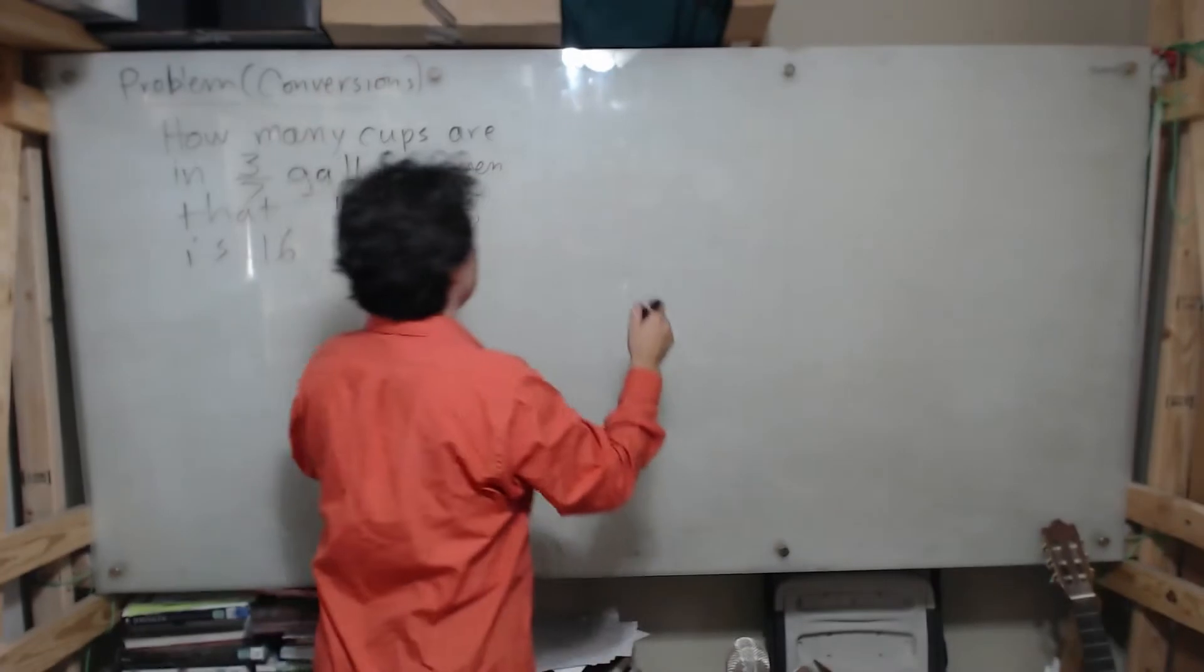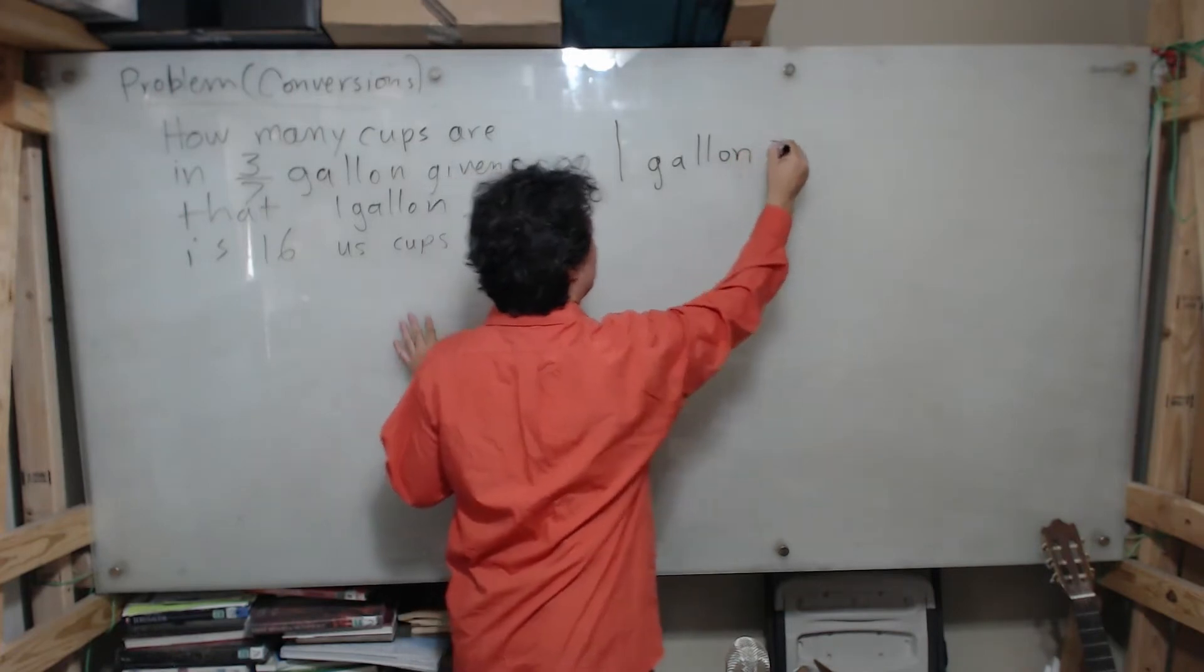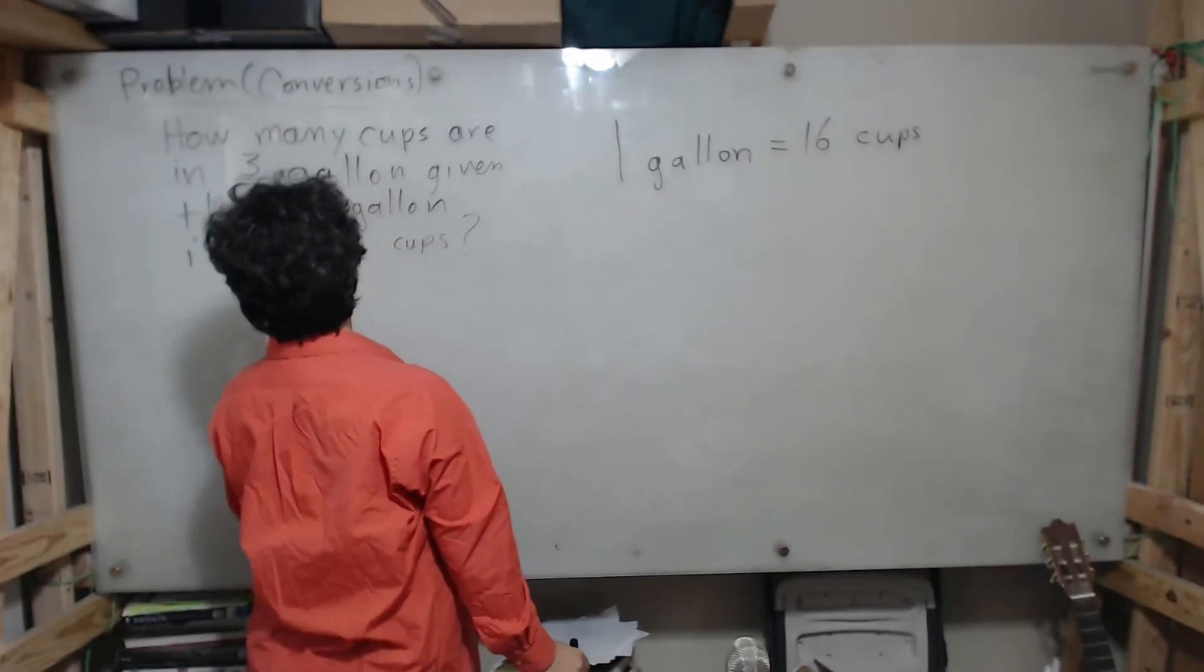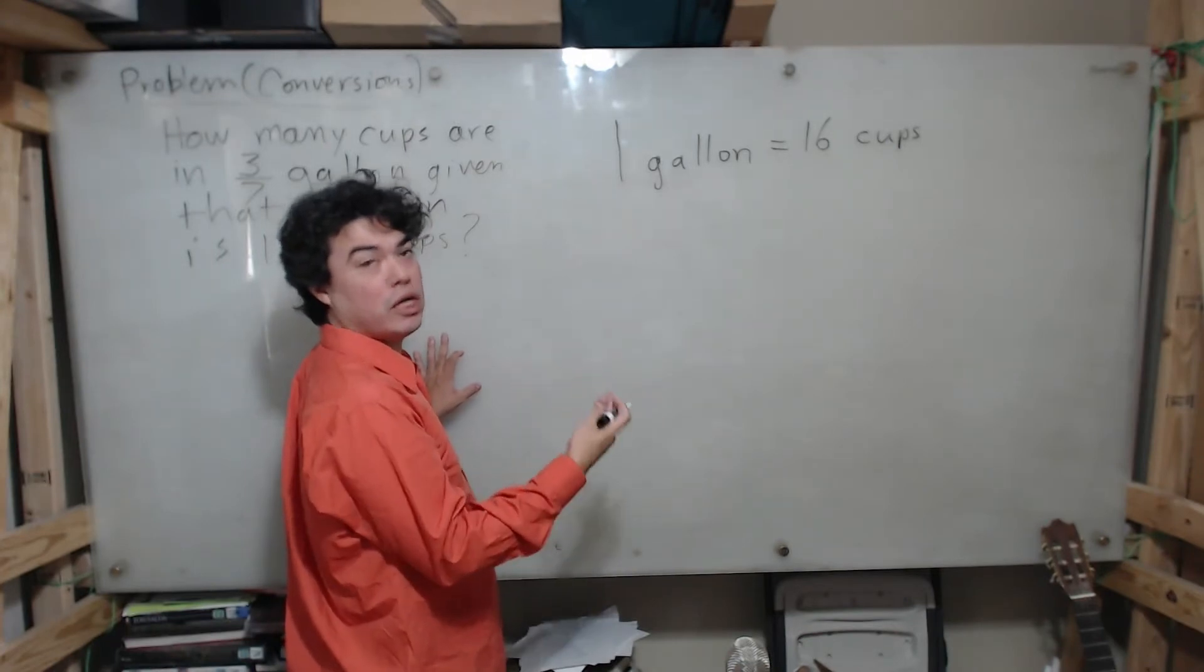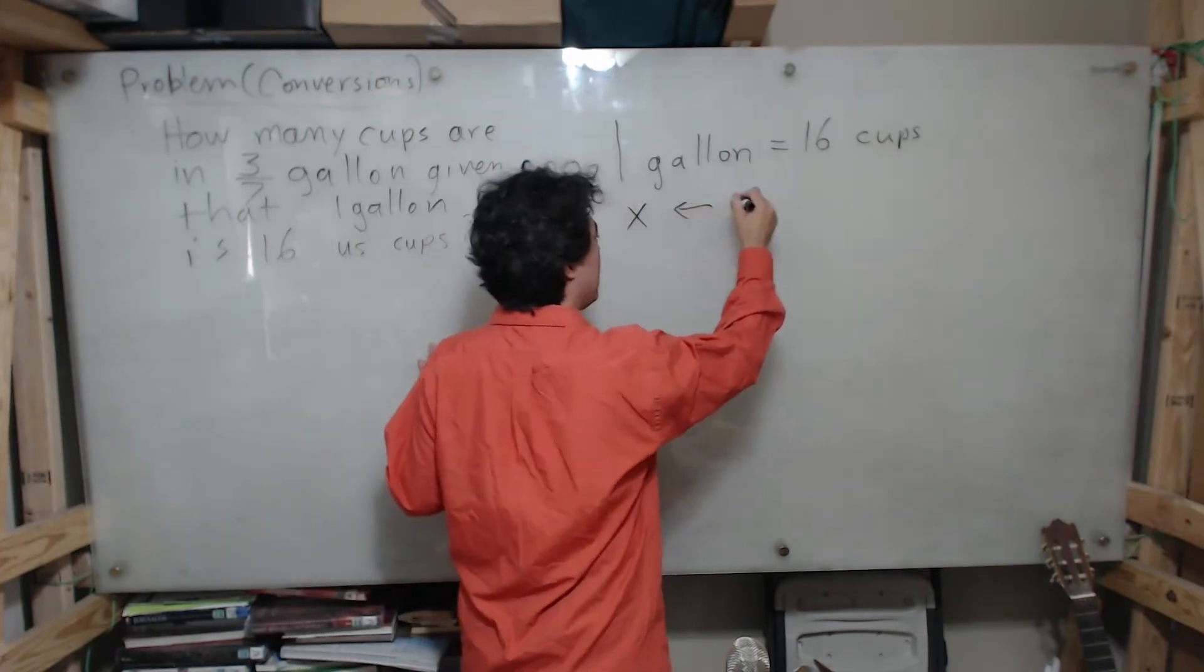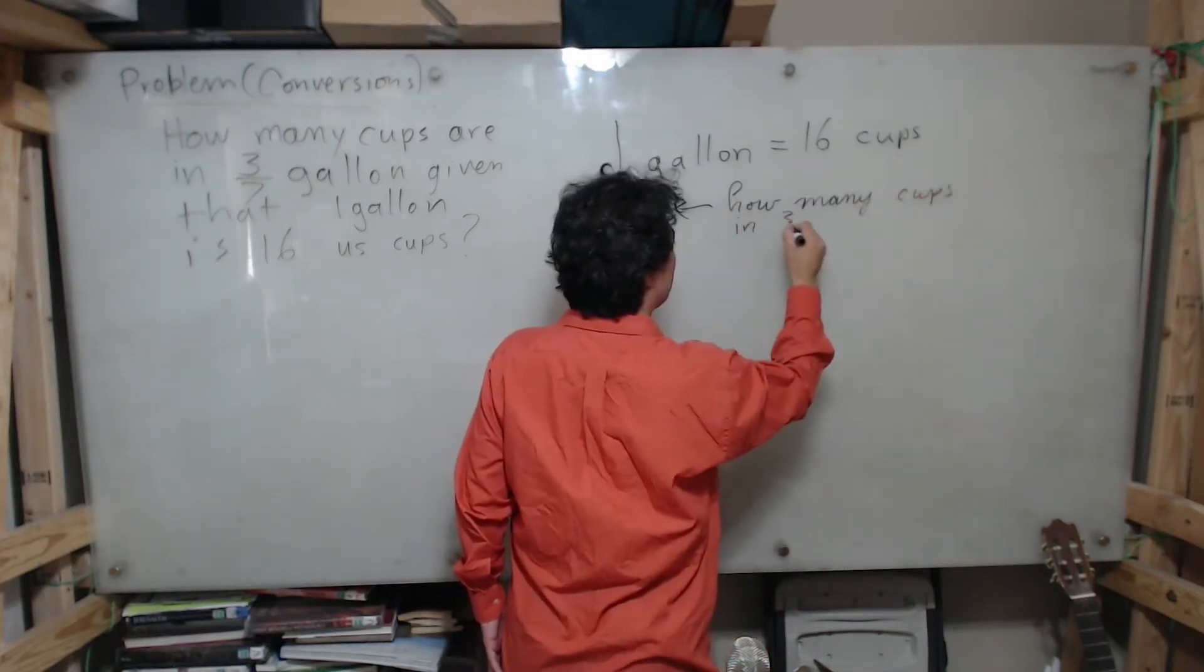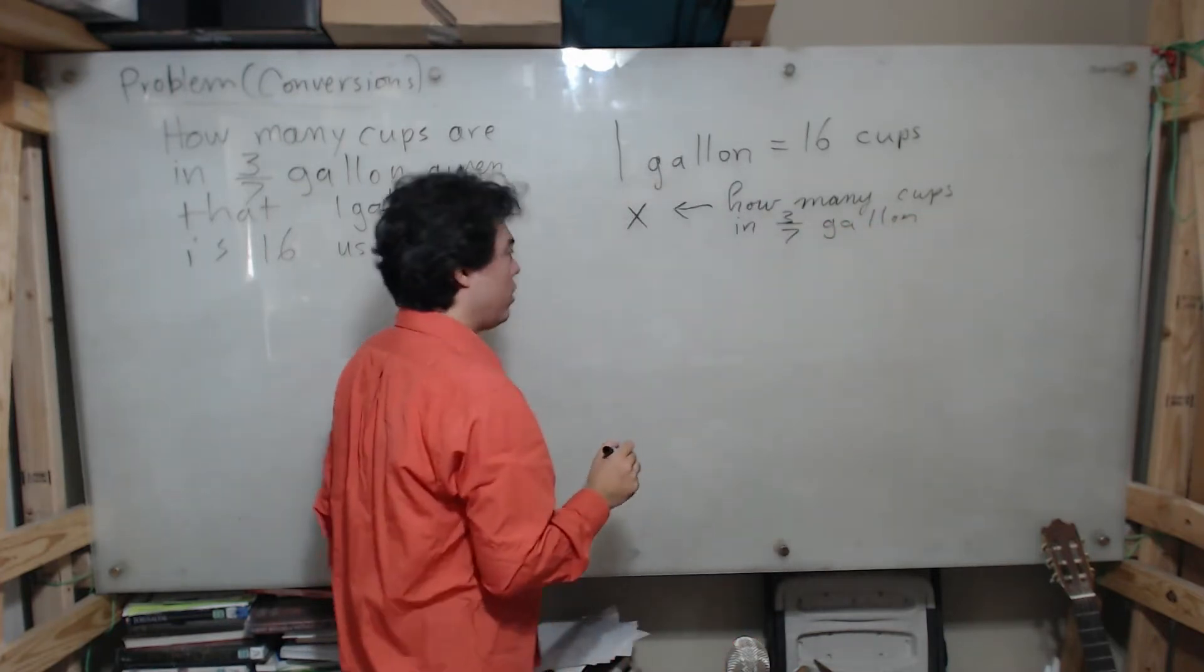So the first thing we're going to do is note our conversion factor: one gallon is equal to 16 cups. And what do we not know? How many cups are in three-sevenths of a gallon. So what we don't know is the cups, so I'm going to put x as our unknown. This is going to represent how many cups in the three-sevenths of a gallon.